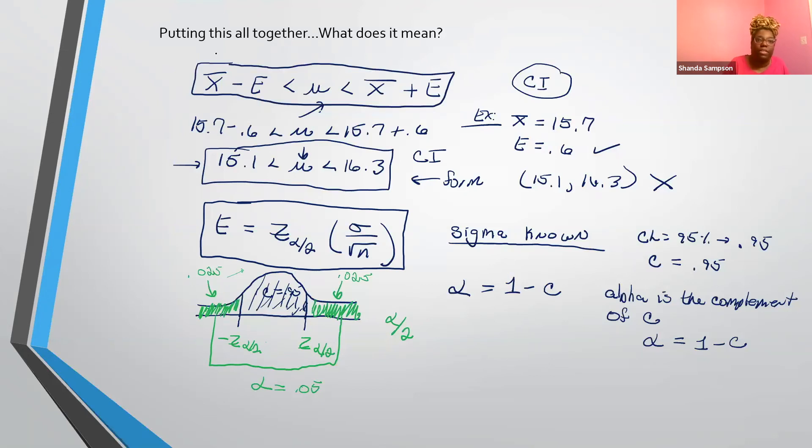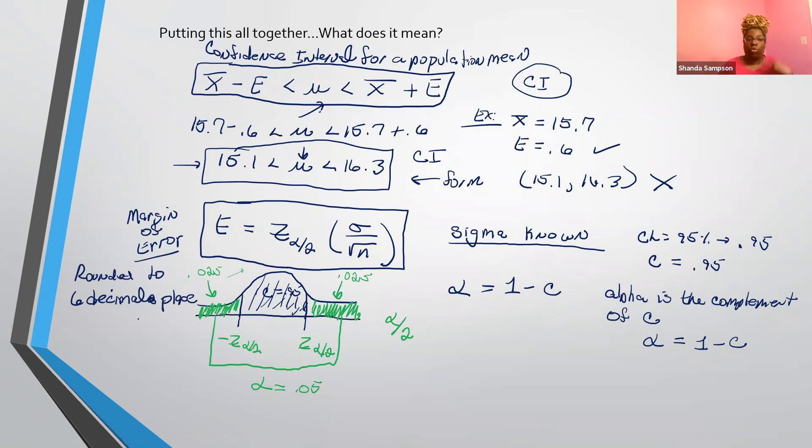Last but not least, this is the confidence interval for a population mean. And this right here is called the margin of error. And just so you know, for my class, the margin of error is rounded to six decimal places. So anytime you write down the margin of error for anything in my class, the margin of error needs to be six decimal places. Because this keeps you from having errors that you carry on and on and on into your next calculation. Remember, statistics is rounded at the end of your data.